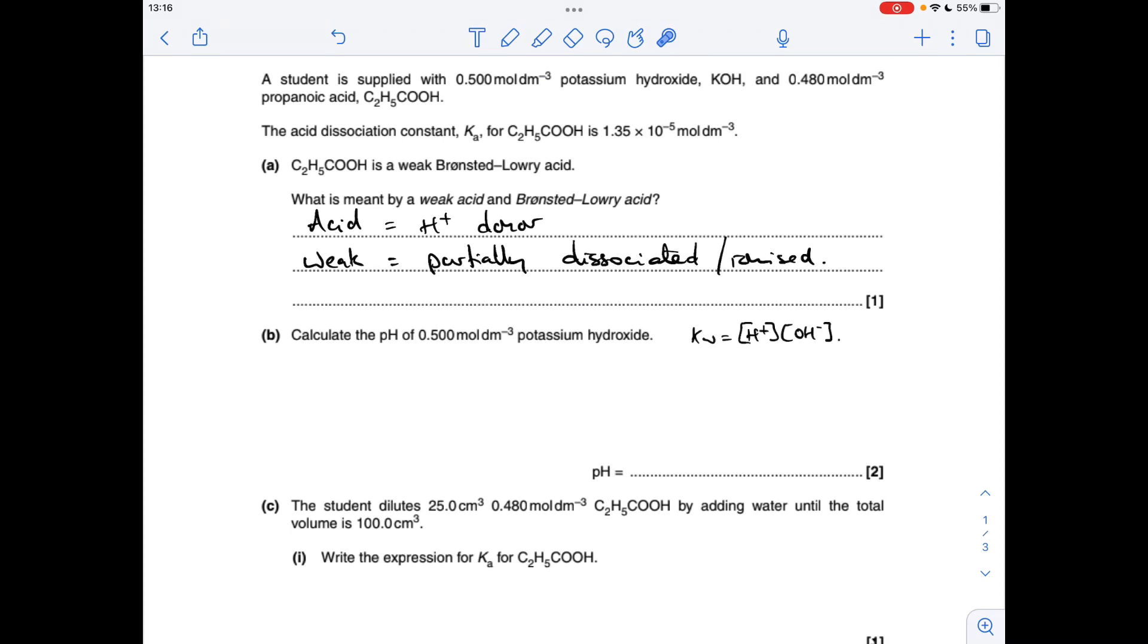Next part, we've got to calculate the pH of this potassium hydroxide, so we'll use the KW expression. It's a strong alkali, so the OH- ion concentration will also be 0.5 moles per decimeter cubed. They haven't given us the temperature, so we're just going to assume that it's 25 degrees C, which will make KW equal to 1 times 10 to the minus 14.